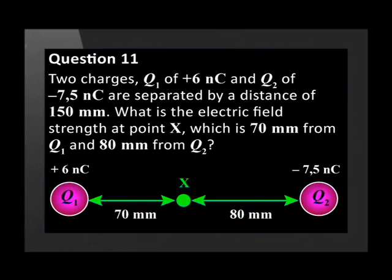What is the electric field strength at point X, which is 70 millimeters from Q1 and 80 millimeters from Q2?